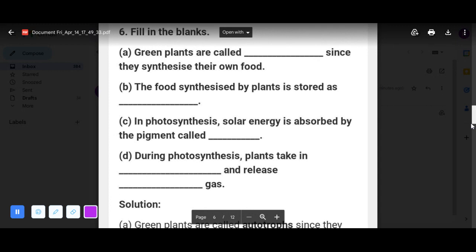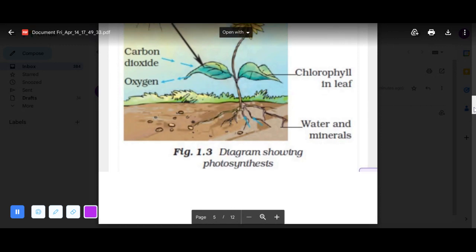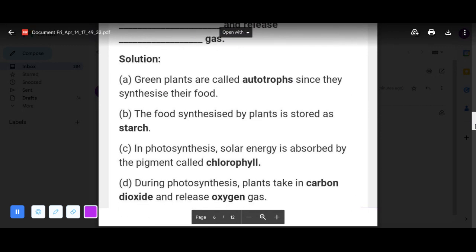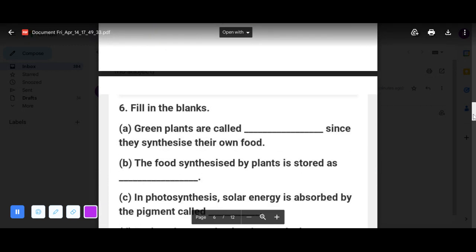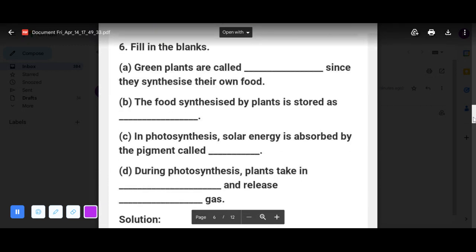Next, the food synthesized by plants is stored as? Yes, it is stored as starch. In photosynthesis, solar energy is absorbed by the pigment? Yes, in the chlorophyll. Now during photosynthesis, plants take in oxygen? No, plants take in carbon dioxide and release oxygen.